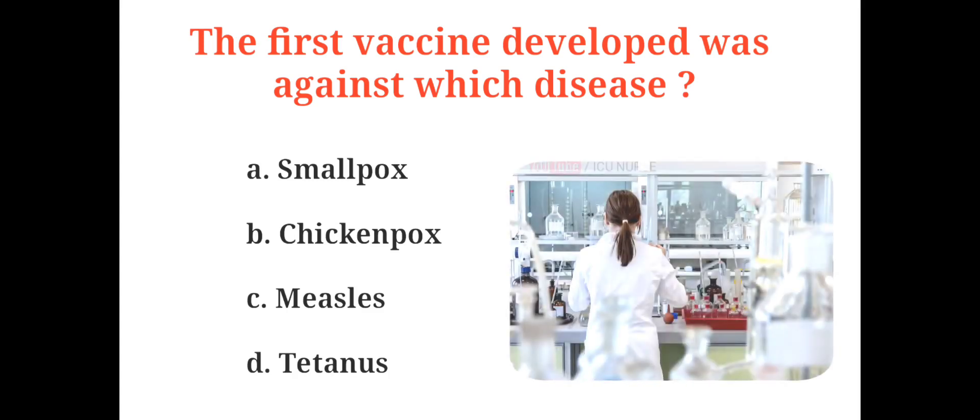The first vaccine developed was against which disease? A. Smallpox, B. Chickenpox, C. Measles, D. Tetanus. And the correct answer is A. Smallpox.